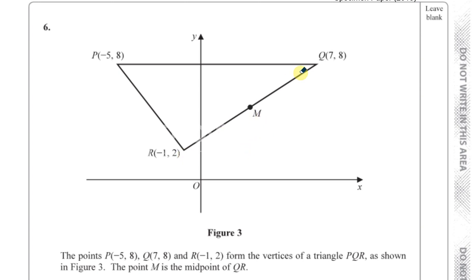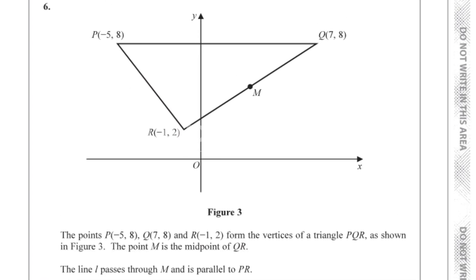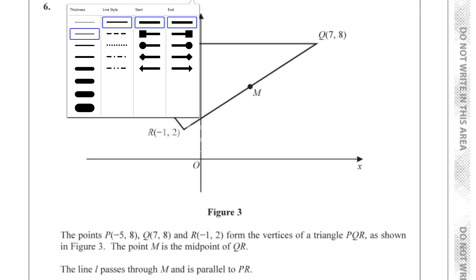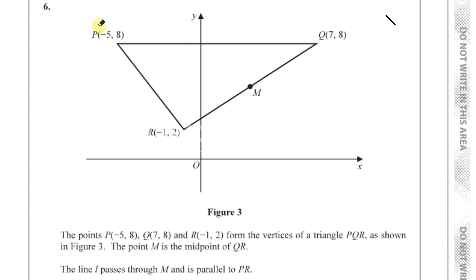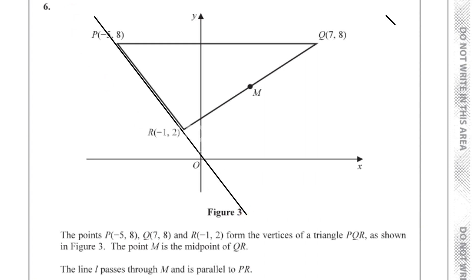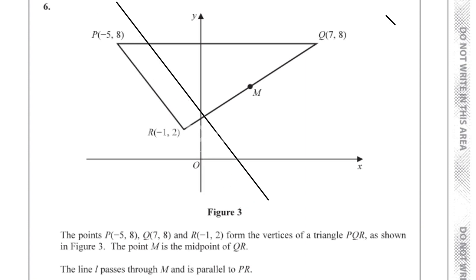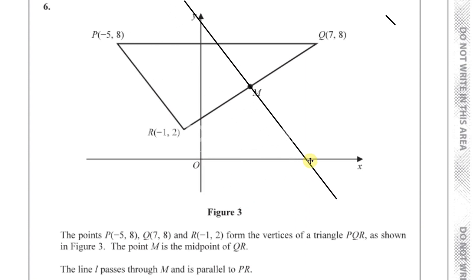The point M is the midpoint of QR. The line L passes through M and is parallel to PR. So if I draw this line going through PR like this — that's parallel to PR but passes through M. That's a diagram showing the line L.